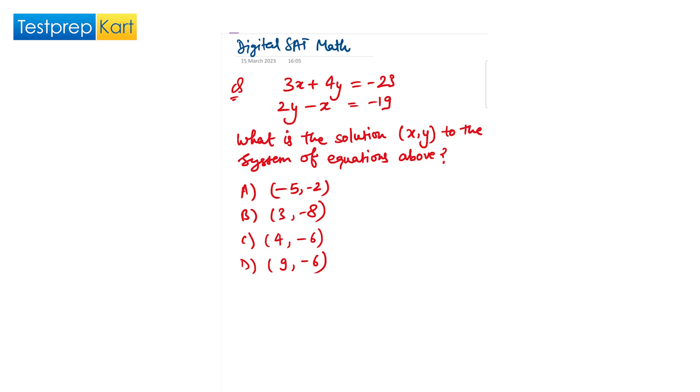Today we are here with a new digital SAT math question. Our question is 3x plus 4y equals minus 23, and 2y minus x equals minus 19. We have to solve these equations and find the value of x and y. Our options are given here.